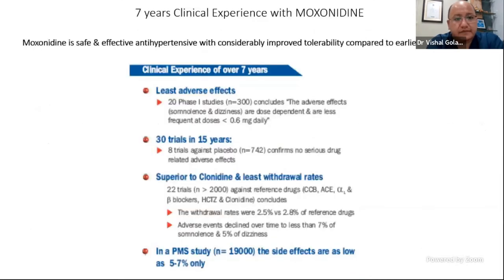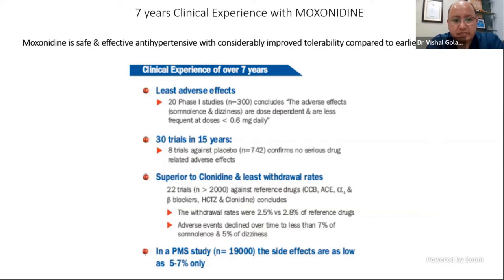One study combined moxonidine with diet versus diet alone for various parameters of endothelial dysfunction — postulated to be responsible for cardiovascular disorders including stroke and renal outcomes. There was significant improvement when moxonidine was added across all parameters studied: systolic blood pressure, glucose, insulin levels, triglycerides, and other lipid levels. This proved moxonidine benefits correction of endothelial dysfunction markers and should theoretically halt progression of cardiovascular disorders and diabetes by improving peripheral insulin resistance. Tolerability has been studied across various trials — 30 trials published over 15 years, many against placebo, showing no serious adverse drug effects.